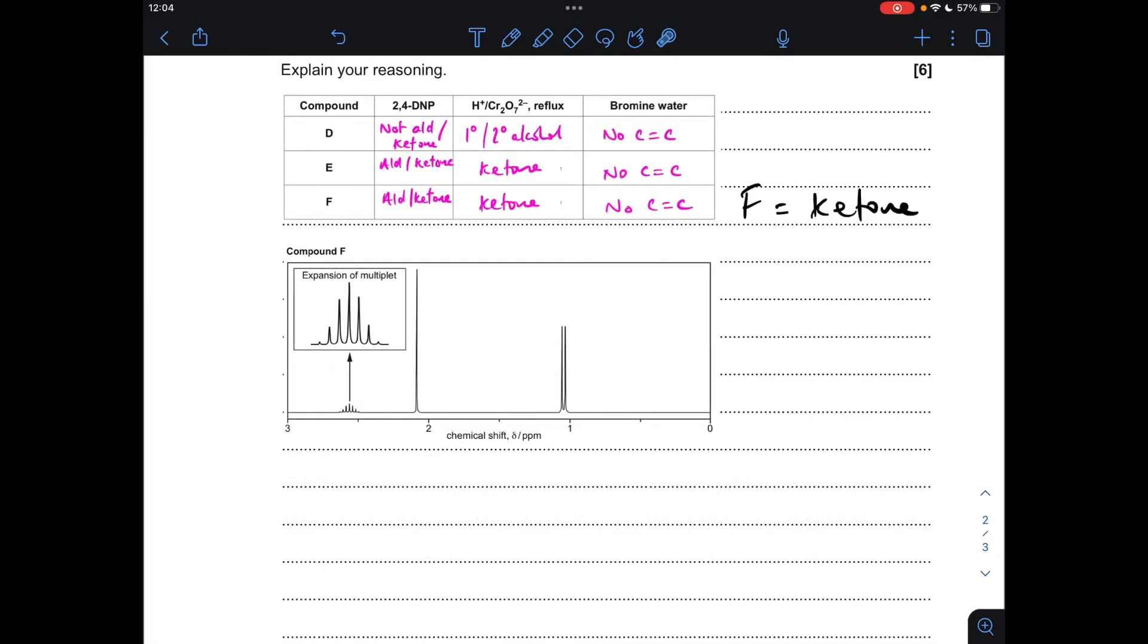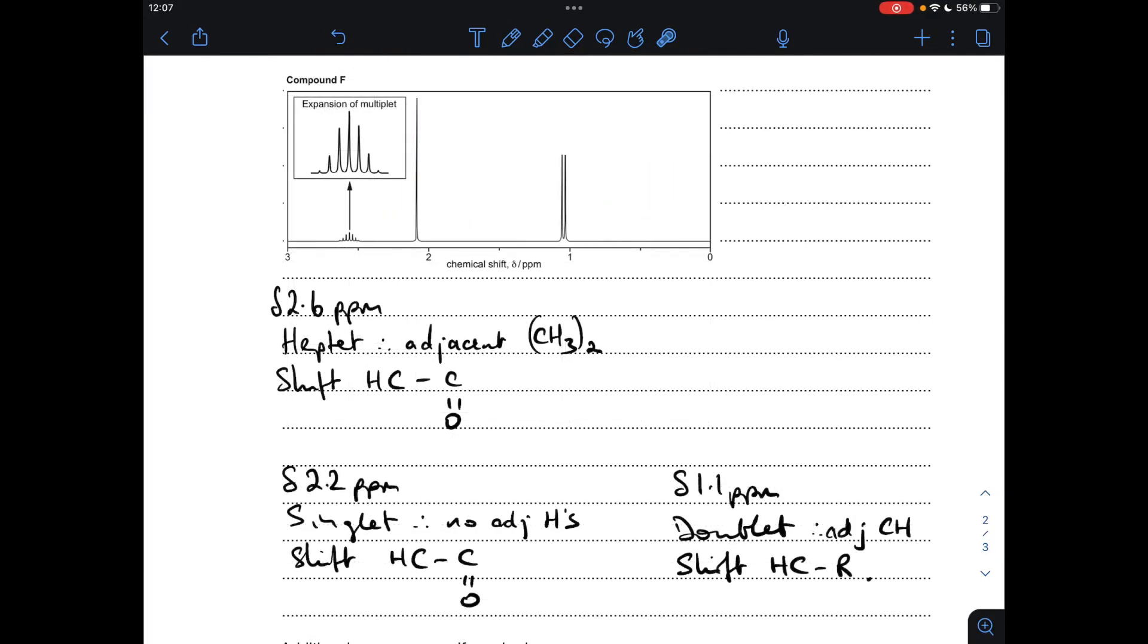And finally, moving on to F, so we've already established this was a ketone as well, and we've got a slightly more complicated-looking proton NMR spectrum. We've got three signals. That one's been expanded, so we'll see in a bit more detail. Three signals, so we've got three proton environments. So I'll just do the same as before and just work out or write down what does this tell us, and then we'll come up with a structure from that.